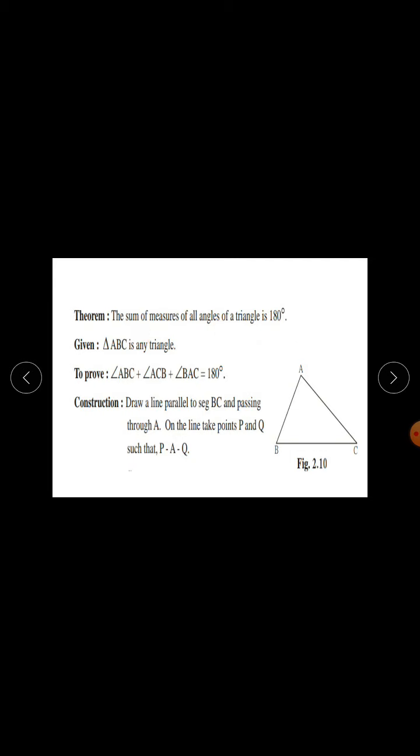The first theorem is: the sum of measures of all angles of a triangle is 180 degrees. This is the property of a triangle. In this statement, one triangle is given and you have to prove that the sum of measures of all angles of that triangle is 180 degrees.